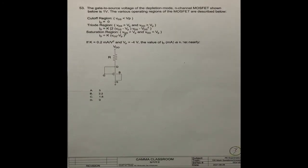Question number 53. The gate-to-source voltage of the depletion mode N-channel MOSFET shown below is 1 volt. The various operating regions of the MOSFET are described below. They have three regions: cutoff region, VGS greater than VP; and triode region, VGS greater than VP and VGD greater than VP.